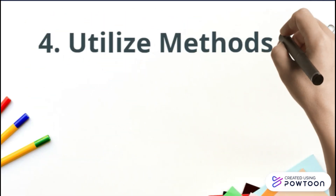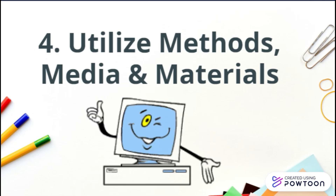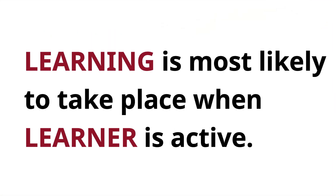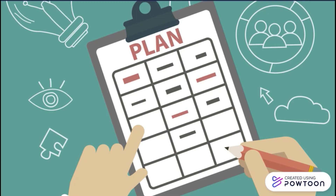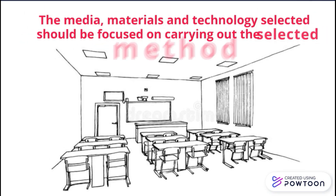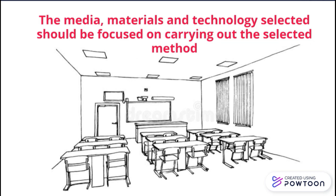Next, we have Utilize Methods, Media, and Materials. This step is where you develop your plan for implementing your media and materials. For each type of media or materials, the teacher selects and describes how they are going to implement the media into the lesson to help learners meet the lesson's objective. The media, materials, and technology selected should be focused on carrying out the selected method. If you decide to use electronic equipment, be sure to test it beforehand, even practice if you have to, to ensure the equipment is functioning properly. It is also important to practice the lesson itself before introducing it to the learner.